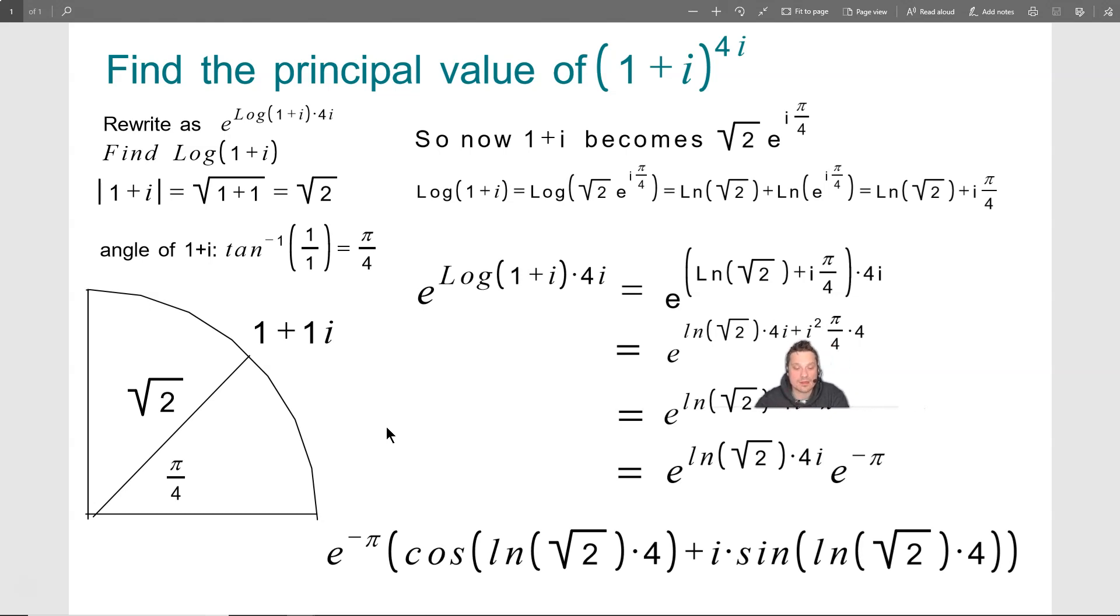Let's simplify this a little bit. So the ln of the root of 2 times 4i, I just left it in that form. And there's going to be here, i squared, so i squared is going to become negative 1, and this 4 and that 4 in the bottom will cancel off, so it's going to give you e to the ln of the root of 2, 4i minus pi. Again, i squared becomes negative 1, the 4 and the 4 cancel off, so you end up with just pi in that position.